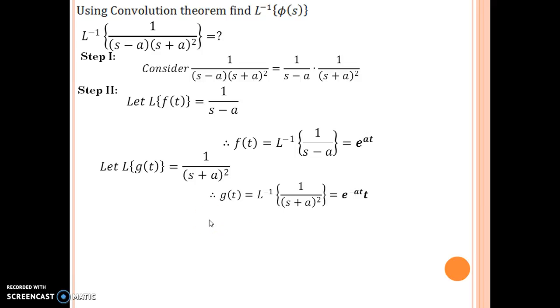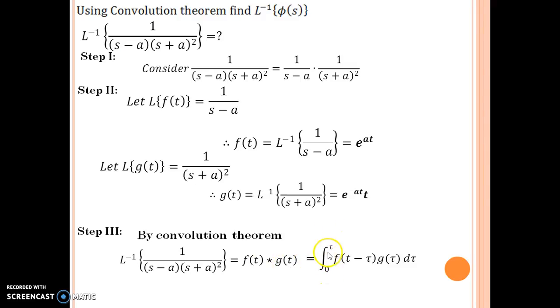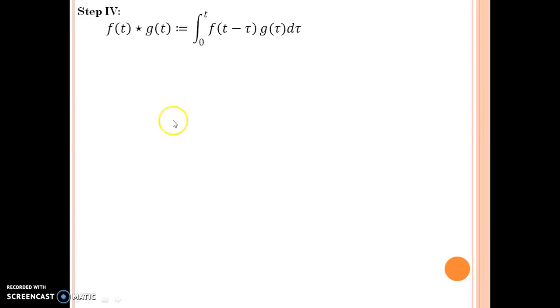Now, the next thing is we have to plug in convolution theorem. So by convolution theorem, what do we know is that our original question is equal to the convolution of f and g, that is f of t star g of t. That is the same as the definition of convolution. The definition of convolution is integral 0 to t f of t minus tau g of tau d tau. That is what we have to use. Let us now go to the definition and use it.